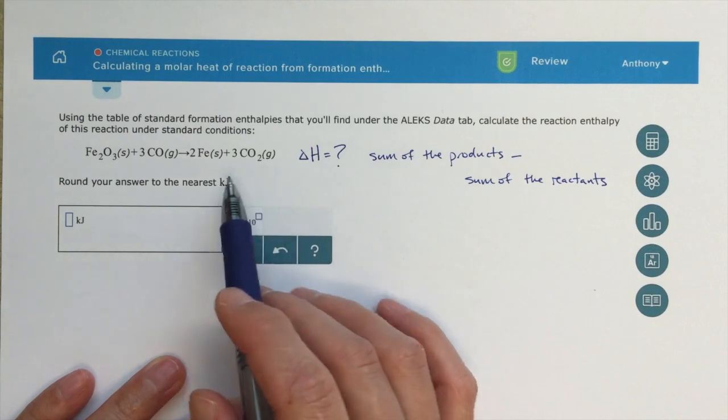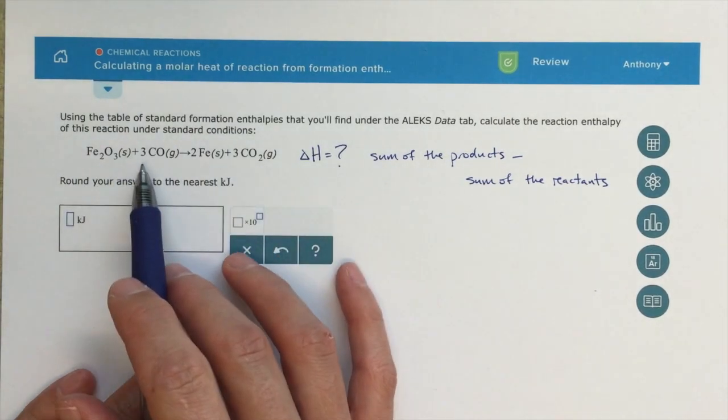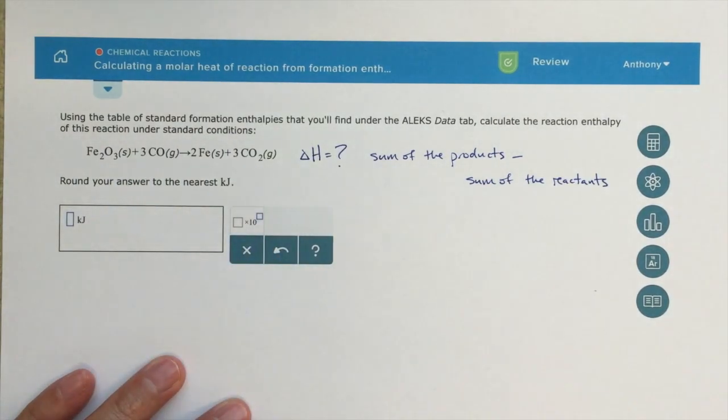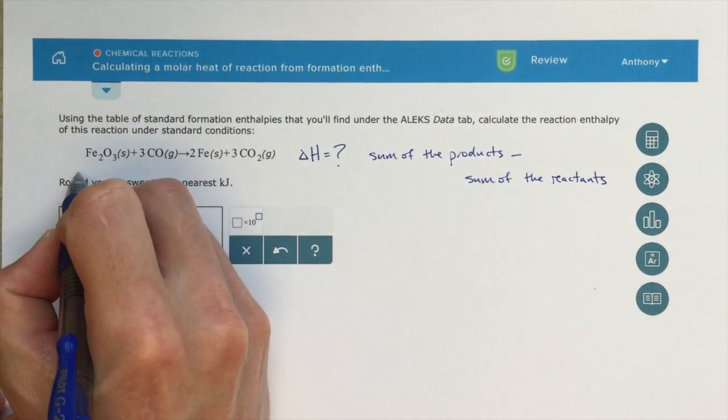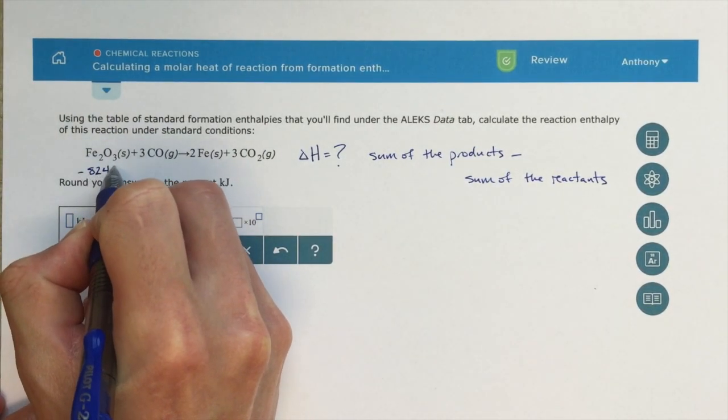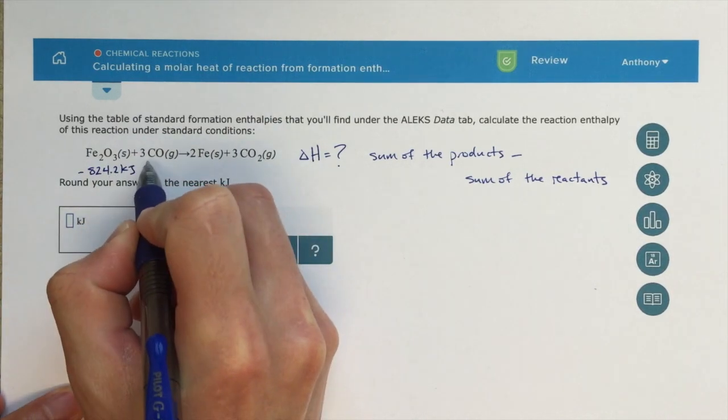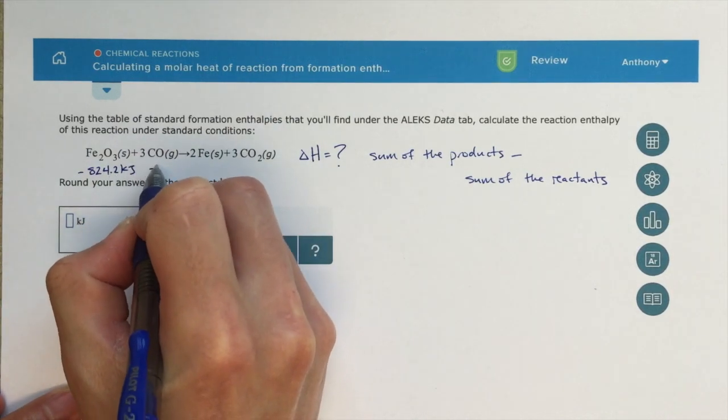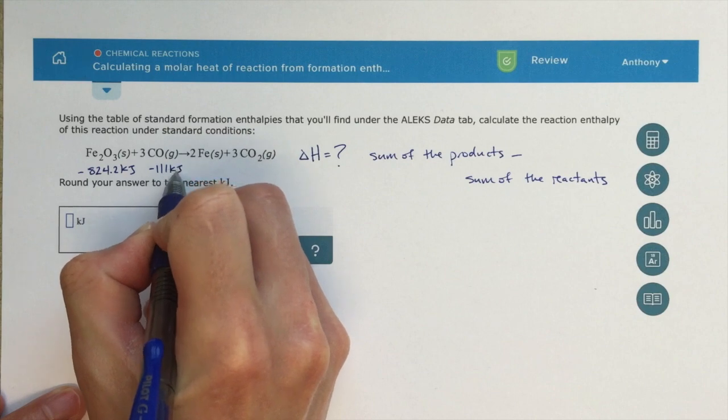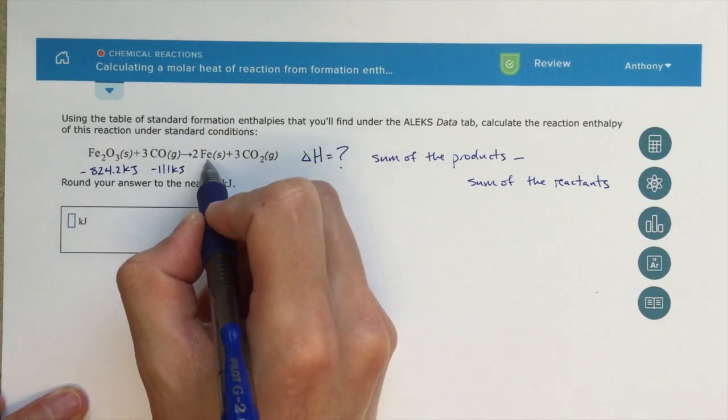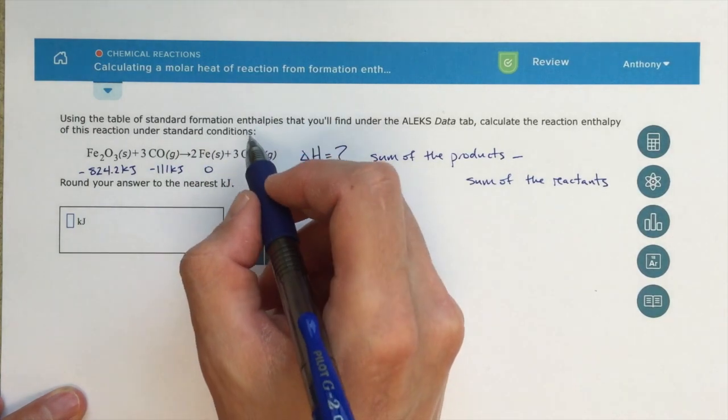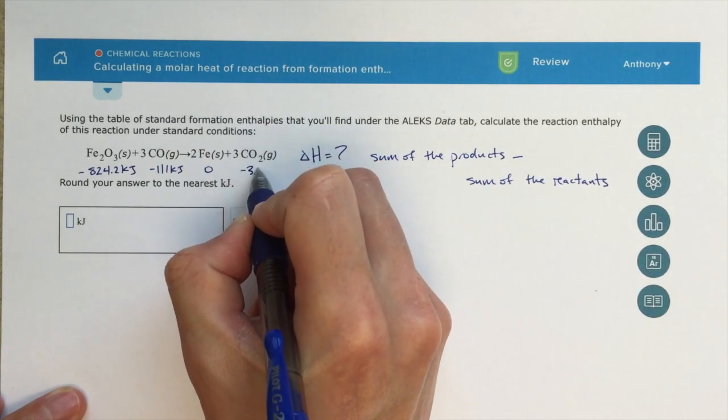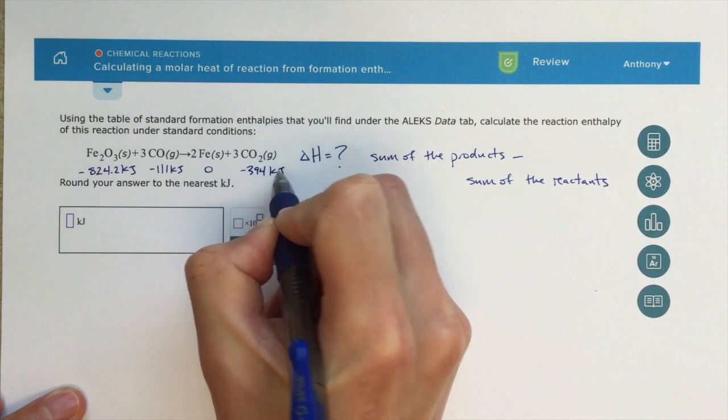Okay, so now that I know how to get all of my different energies, I can go ahead and start writing out that information. So for iron oxide, we saw that that was minus 824.2 kilojoules per mole. For CO, if I do the same thing to look this up, it's minus 111 kilojoules per mole. Iron is a pure substance, that's my pure form of iron, so it's zero in elemental form, and then CO2 is minus 394 kilojoules.